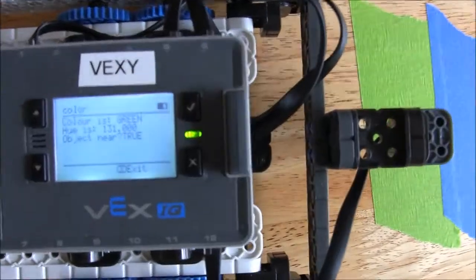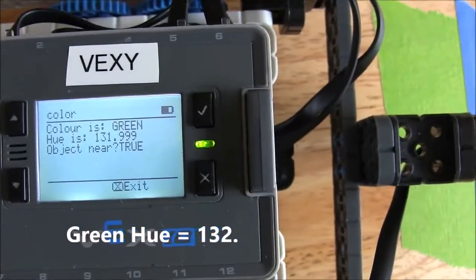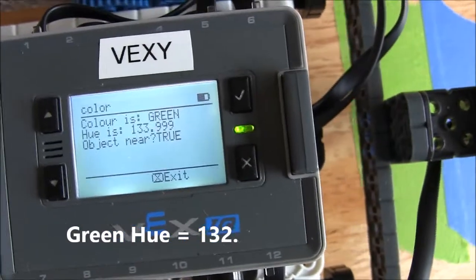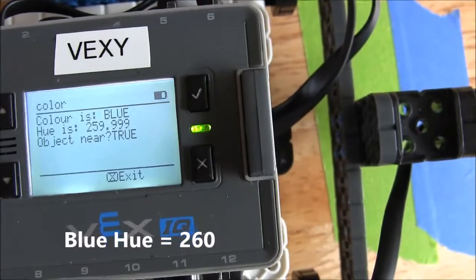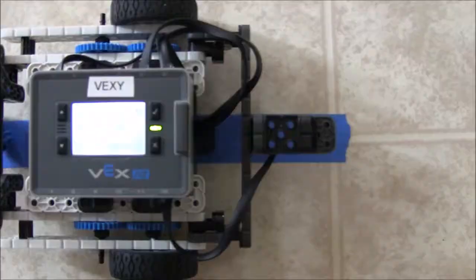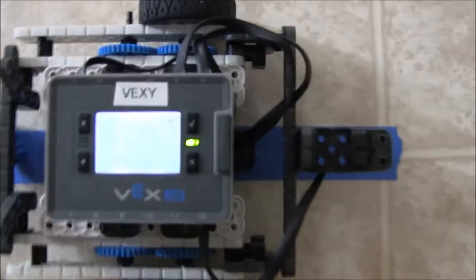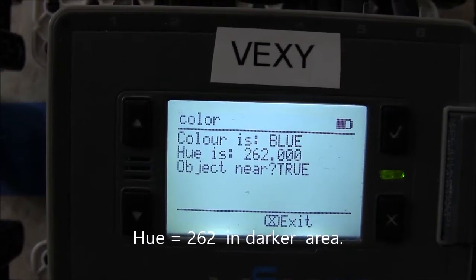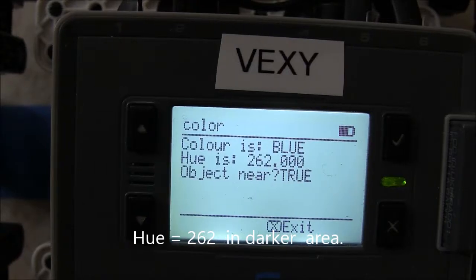Watch the video again and you can see it happening. Now we are looking at the color sensor value. The green tape gives us a hue and the blue tape gives us a hue. The green was 132, the blue was 260. Now if we go in a little darker area, we notice that the blue hue is now 262. So ambience affects measurement.